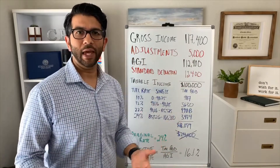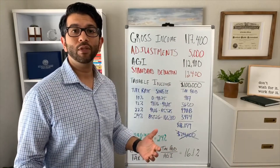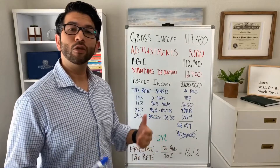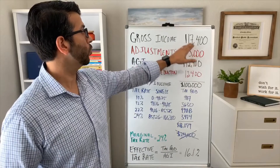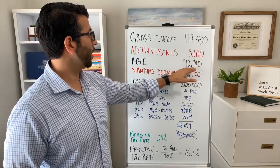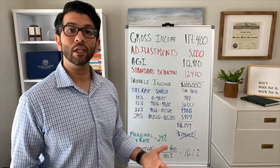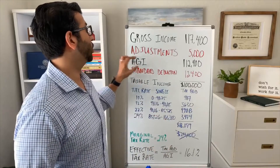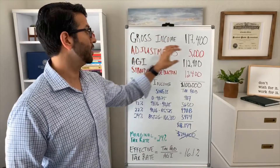From that gross income number we're going to deduct adjustments. Adjustments are a handful of items that come off the gross income, and in this example I'm using something you might be familiar with — the traditional IRA. A traditional IRA contribution is an adjustment, and that reduces the $117,400 by $5,000, arriving at $112,400 for this individual's adjusted gross income.